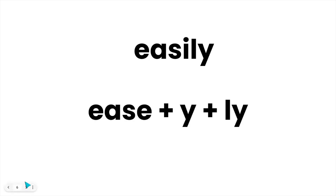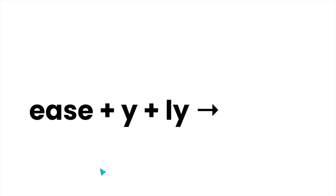Let's look at the word 'easily.' The word easily is made of three morphemes or parts. It comes from the word family with the base E-A-S-E, and added to that are two additional suffixes, Y and L-Y. So in order to write this out as a word sum, I would say E-A-S-E plus Y plus L-Y. And now I look at the joins.